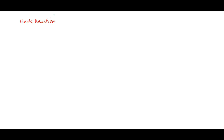Another reaction in your textbook is the Heck reaction, also called Heck coupling. A Heck reaction is when you take a halogenated benzene — X is typically bromine, though it could be chlorine or iodine — and react it with an alkene that has an R group on it.